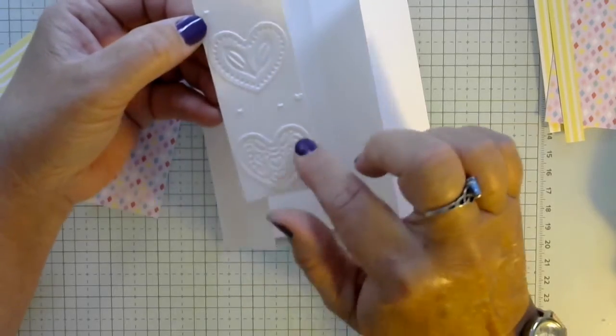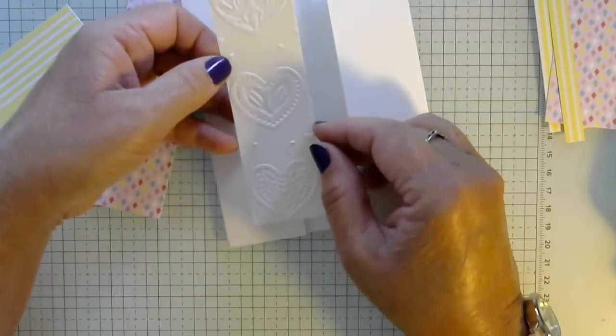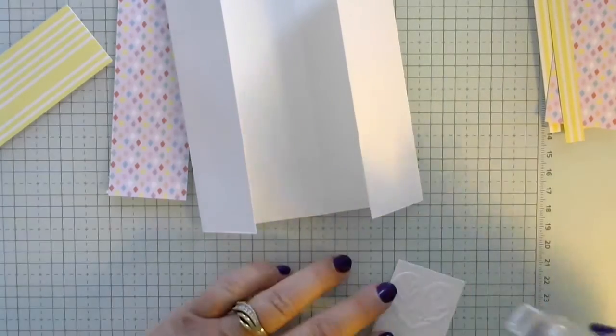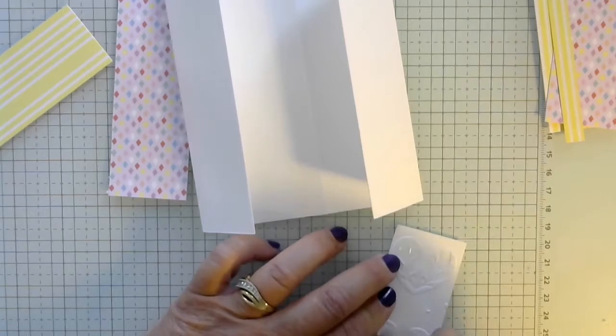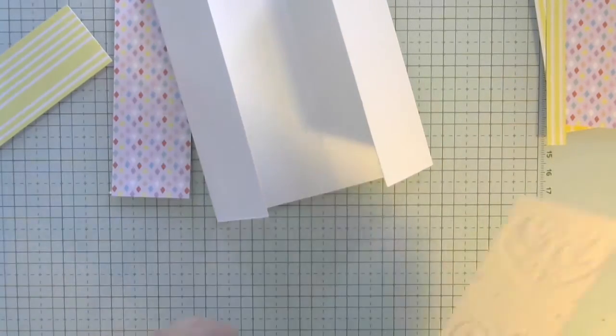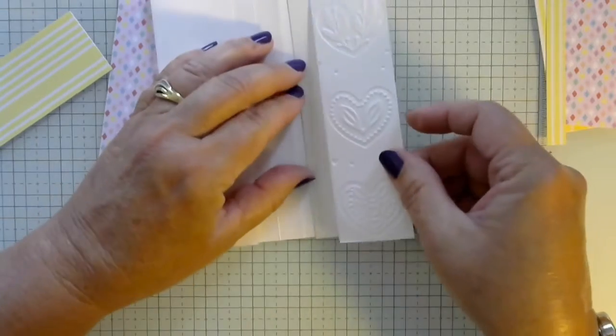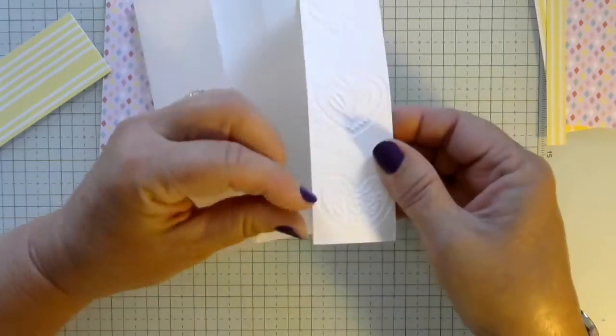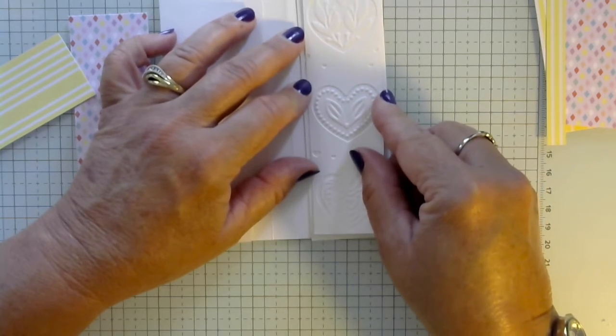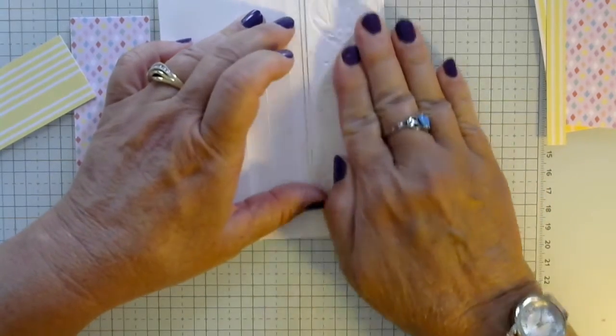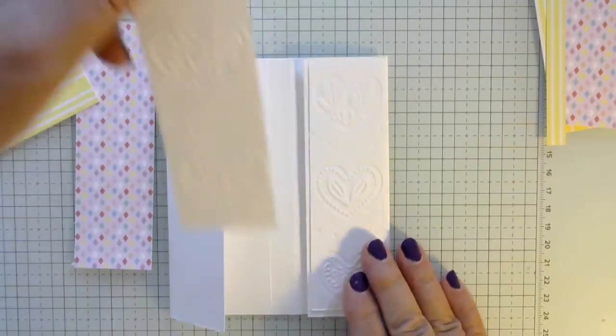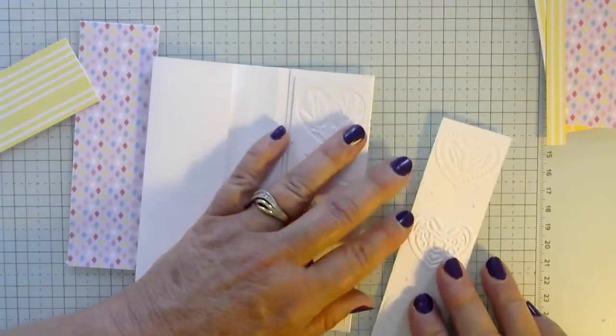These are pretty either on the debossed side or the embossed side. It's hard to choose because the designs are beautiful either direction. I think I'm going to go this way. Now I have to remember which one I did so that they're both the same direction. So I want to put the adhesive on this side.